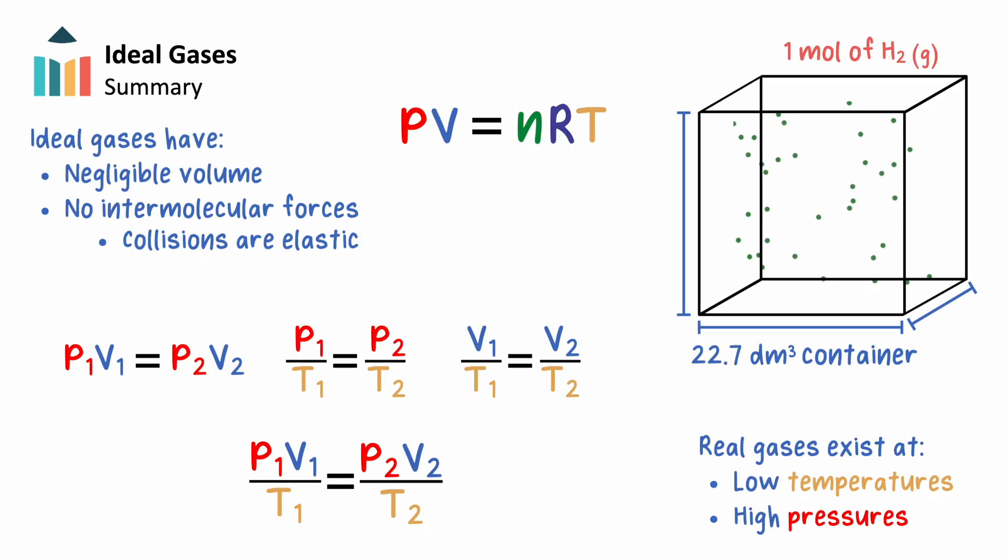In summary, we've covered the key assertions and limitations of the ideal gas model. We learned about the molar volume of an ideal gas at STP and how real gases deviate from ideal behavior under certain conditions. We also explored the ideal gas equation, gas laws that show specific relationships between our variables, and the combined gas law that brings it all together.